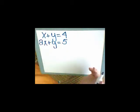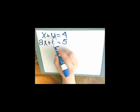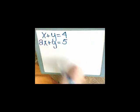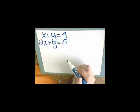It doesn't really matter which one I get rid of, the x or the y. But I notice that if this was a negative y, negative y plus y would be 0. So that's the one I'm going to go for.